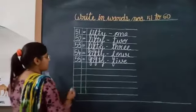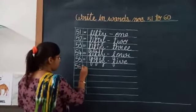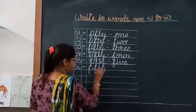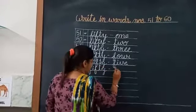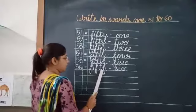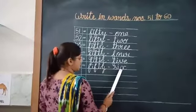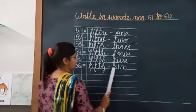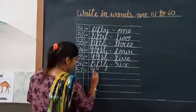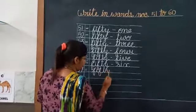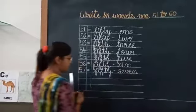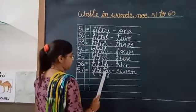Which number will come after 55? That is 56. F-I-F-T-Y, 50. S-I-X-T-Y, 50.